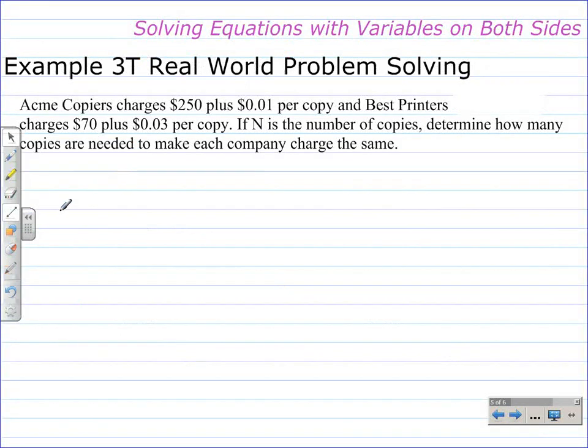Here we have a real-world problem-solving situation. It reads: Acme Copiers charges $250 plus 1 cent per copy, and Best Printers charges $70 plus 3 cents per copy. If n is the number of copies, determine how many copies are needed to make each company charge the same.